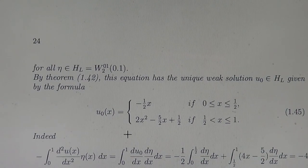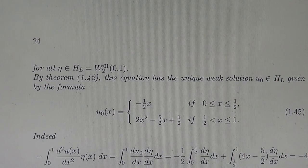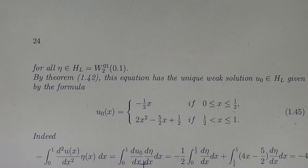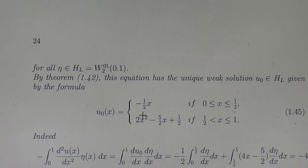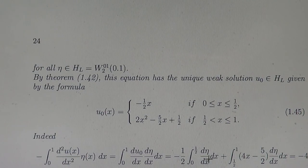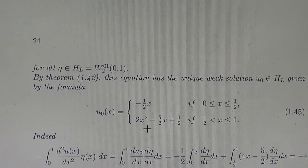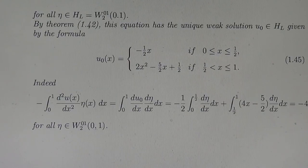Indeed, this is the weak solution of the variational equation. Taking the left side of the variational equation and integrating by parts, and using the derivative of U0 with respect to x — which equals minus one-half eta from 0 to one-half, since removing one point from the interval of integration does not affect the integral — plus the contribution from one-half to one, we confirm that the variational equation holds for all eta in the domain. Thank you.